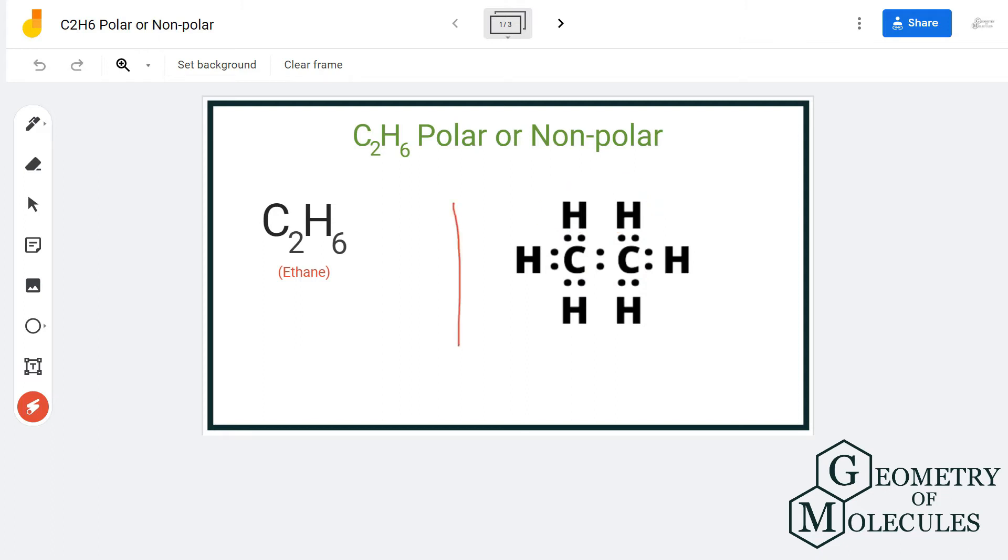So here is the Lewis structure for C2H6, in which two carbon atoms are sharing their valence electrons with three hydrogen atoms each, as well as sharing their valence electrons with each other.